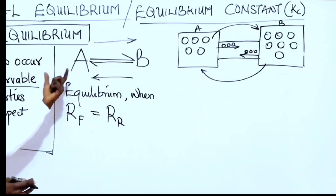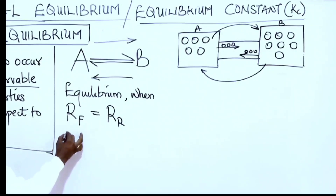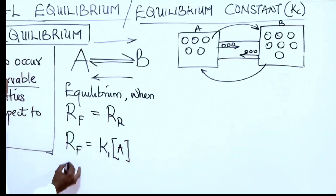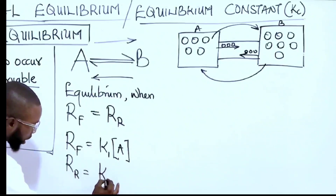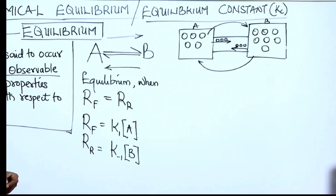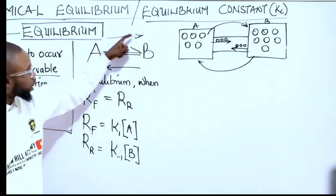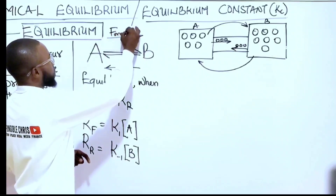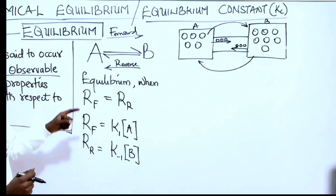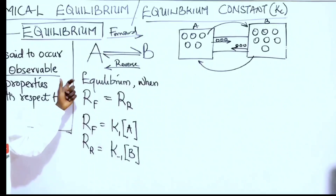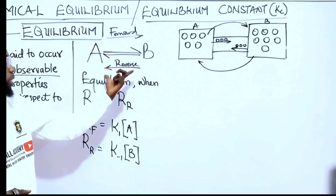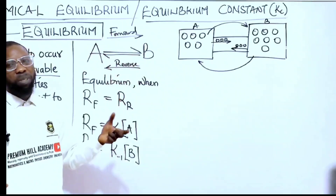Let me explain this with the graph. The rate of the forward reaction is equal to K1 times the concentration of A. And the rate of the reverse reaction is equal to K-1 times the concentration of B. We said equilibrium will occur when the forward reaction equals the reverse reaction. At this point, there is no change in the concentration of either A or B. Although something is happening — it's called dynamic equilibrium — but there is no real observable change.